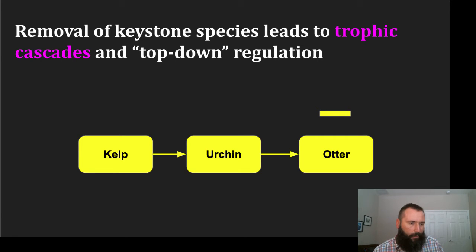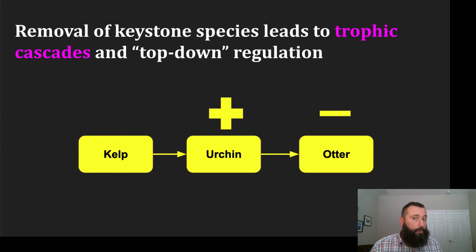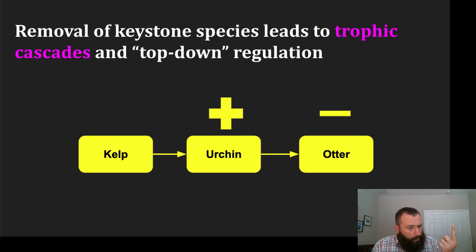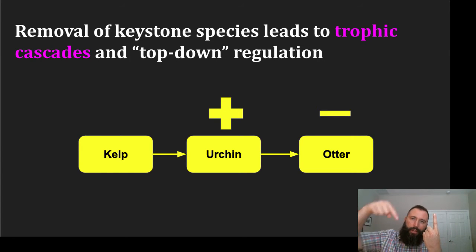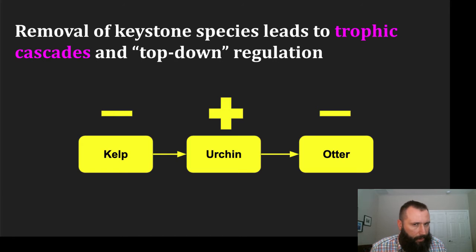Let's put a minus over the word 'otter' to indicate a decrease. If we decrease the otter, we will increase the urchin. If we have fewer otters eating the urchins, the urchins will reproduce in greater numbers — that's a direct result of otter removal. Now what happens to the kelp? That's an indirect response. If we increase the urchins and they're eating off of the producers, we decrease the kelp. So the removal of the otter is indirectly influencing the producer population by also decreasing it.